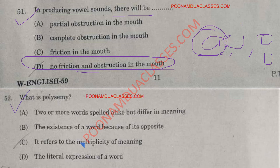Question number 52: What is polysemy? The correct answer is option C — it refers to multiplicity of meaning. The coexistence of many possible meanings for a word or phrase is called polysemy.